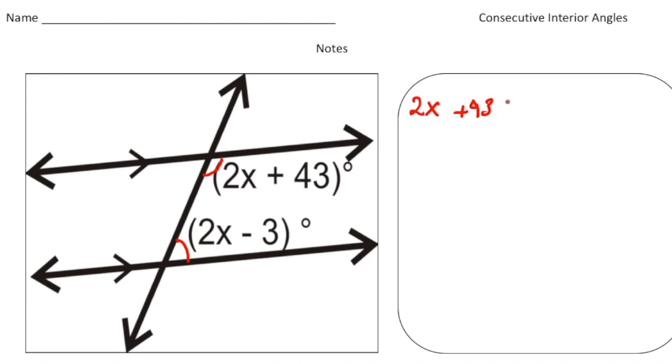Again, it's supplementary. So now we can simplify this. 2x and 2x is 4x, and 43 minus 3 is 40, equals 180. Now I'm going to take away 40 from both sides.